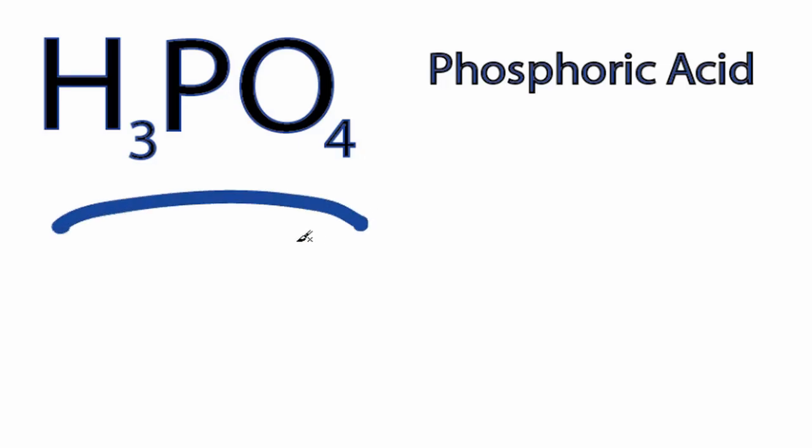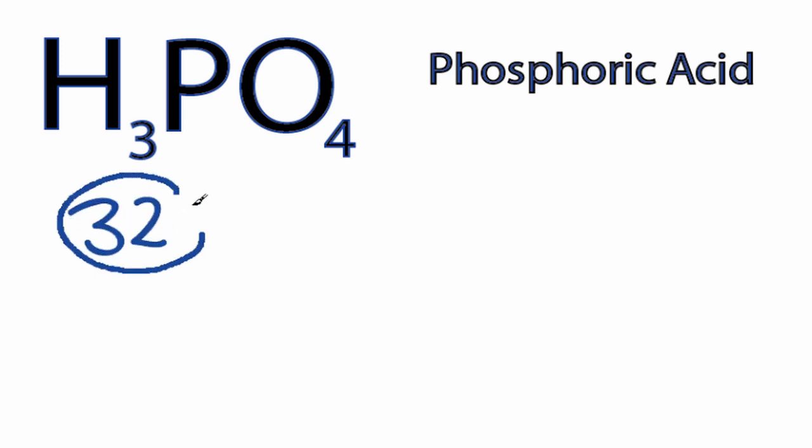This is the H3PO4 Lewis structure, phosphoric acid. For H3PO4 we have a total of 32 valence electrons.